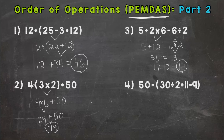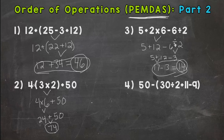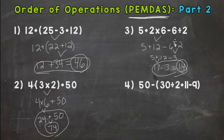Notice on problems one and three, on the final step I wrote the equation with an equal sign, like 12 plus 34 equals 46, or 17 minus 3 equals 14. On problem two, I continued down with the arrow or partial triangle method and circled 74 under the final step. Either way is fine — equal sign or continuing down — it doesn't really matter as long as you get to the correct answer.